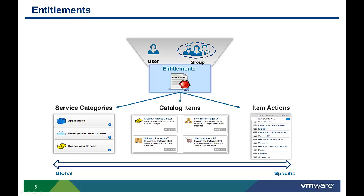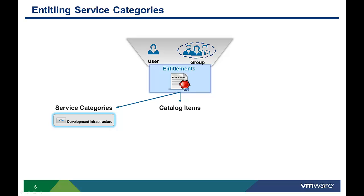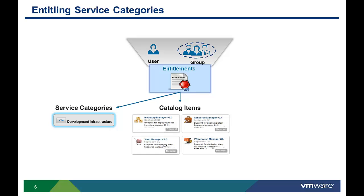Entitlements determine which users or groups of users can request catalog items or perform specific actions. Business group managers can configure entitlements for their group, and tenant admins can configure entitlements for all business groups. Approvals can also be specified as part of an entitlement, but that subject will be covered in another video. If the admin entitles an individual or group of users to a service category, then they are automatically entitled to all the catalog items that belong to that category.